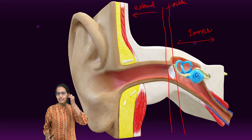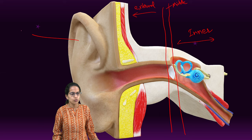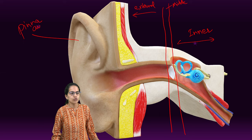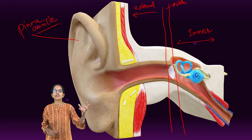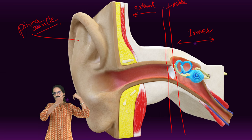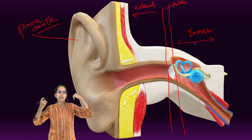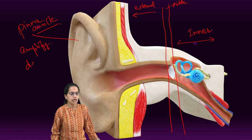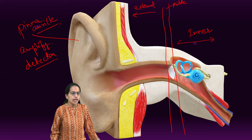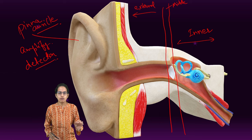The external ear that I can feel here is what is known as the pinna. It is also known as the auricle. The function is to detect the sound waves, transfer them to the inner ear, and amplify the sound. So amplification and detection of sound waves is the main function.